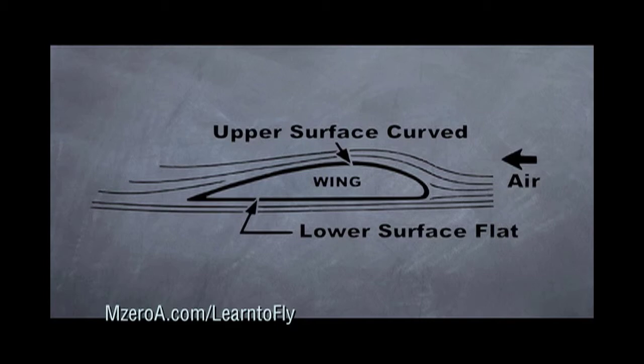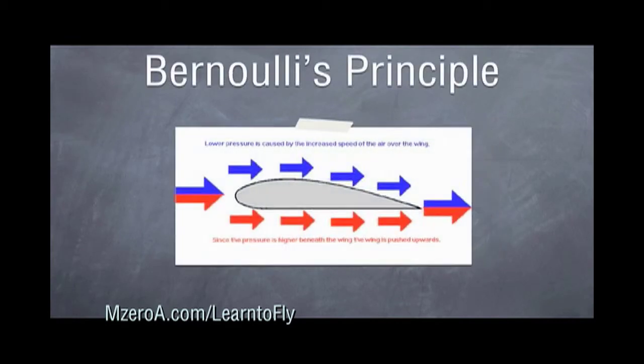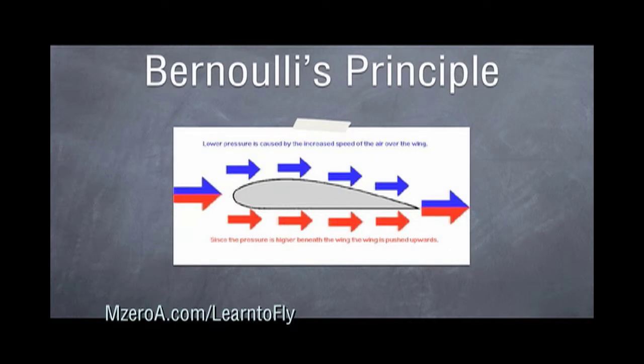The gentleman who founded this, Mr. Bernoulli, also founded Bernoulli's Principle, and that states exactly what we just said. The air flowing over the top of the wing has to travel faster and creates that area of low pressure, while the air underneath the wing travels slower and generates a higher pressure, which pushes the wing upwards.